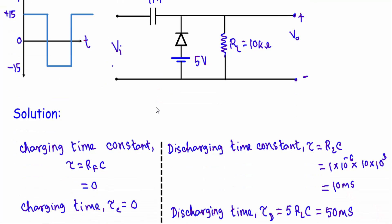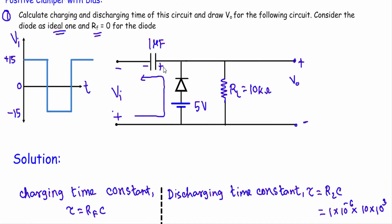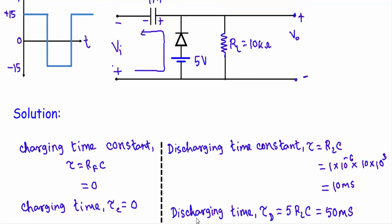Now let me calculate the charging and discharging time of this circuit. The capacitor gets charged when the diode is in forward bias. When this terminal is positive and this terminal is negative, the capacitor charges through the diode's forward resistance RF and the capacitor C. The charging time constant τ = RF × C. Since the forward resistance RF of this diode is zero, the charging time constant is zero, and the total charging time τ_C = 5 × RF × C = 0.